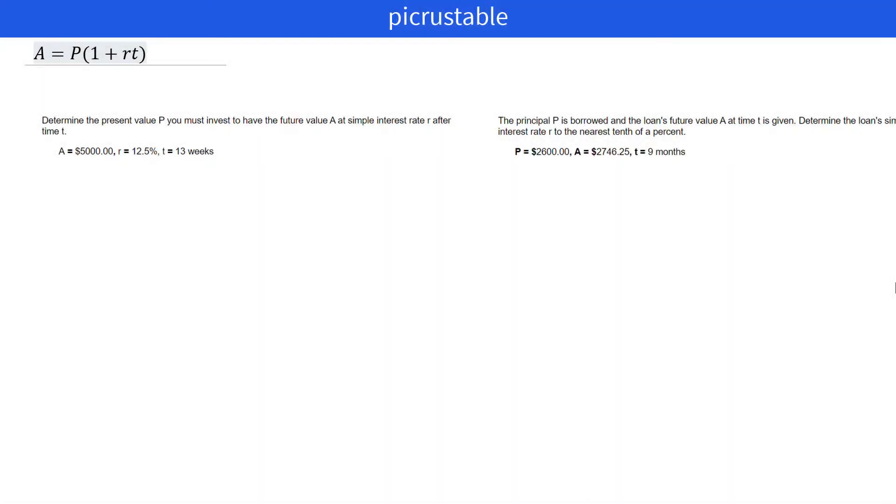To determine the present value P, you must invest to have a future value A at simple interest rate R after time T. And yes, we're going to be using this formula. So let's write out our formula. A equals P times 1 plus RT.